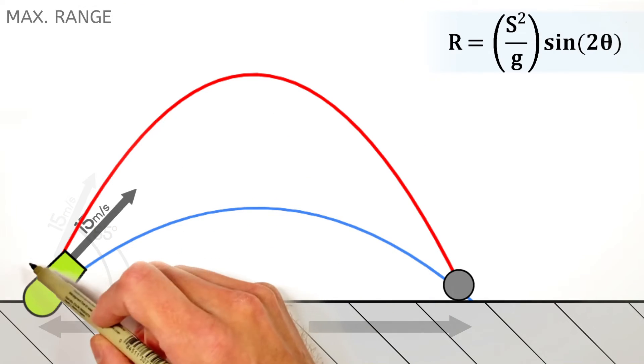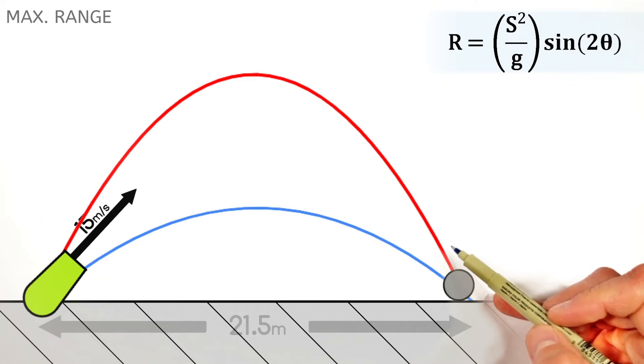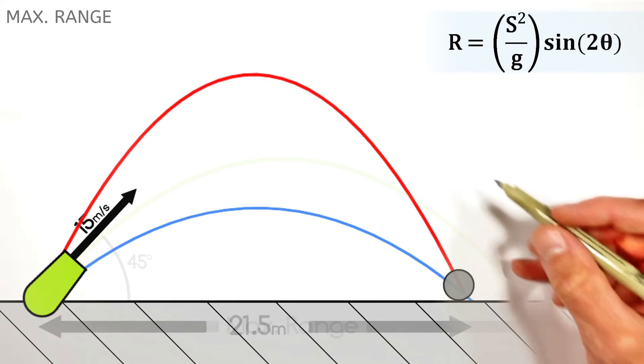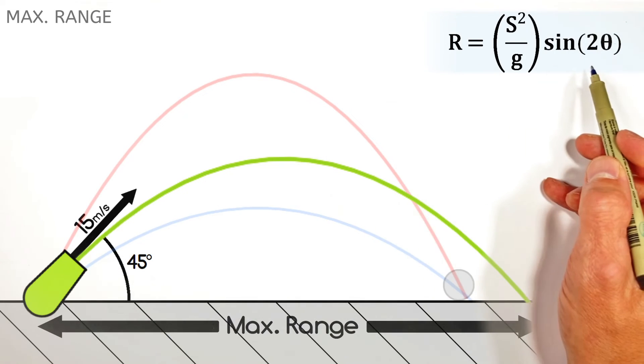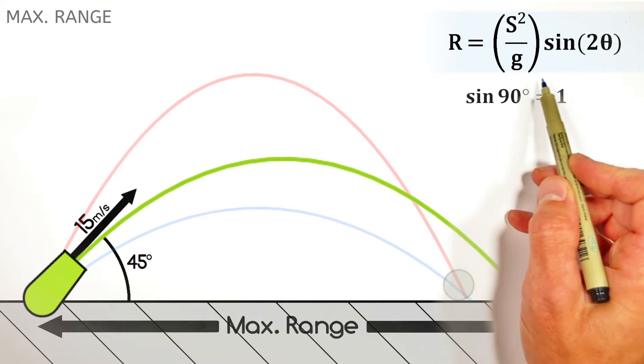Now, ideally, we could angle this cannon so that it has both a long hang time like this high shot, but it's also moving horizontally rather quickly, which leads us to the maximum range of this cannon. You see, looking at the range equation, the largest that this sine term can ever be is 1.